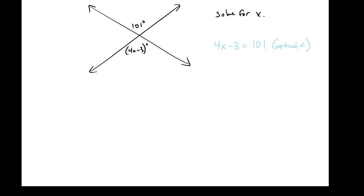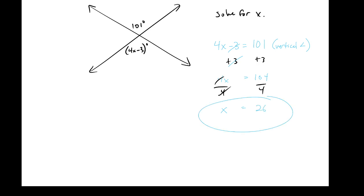I'm very confident in your ability to do the algebra. So 4x minus 3 equals 101, which gives us 4x equals 104 after adding 3 to both sides, and then dividing both sides by 4 gives us x equals 26. Of course you need to show your algebra as well, but the more important thing I want to introduce at this point is that you cite your reasoning for why you set the problem up that way.